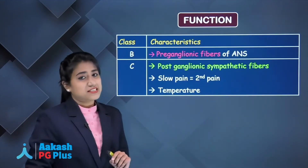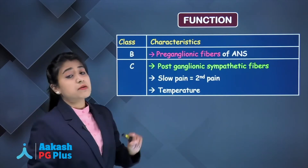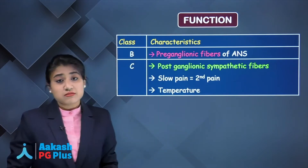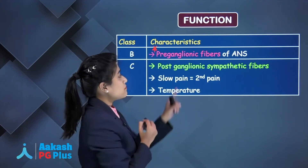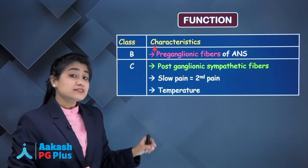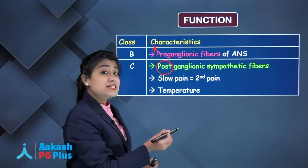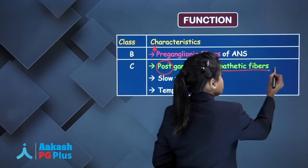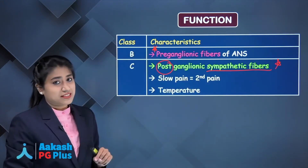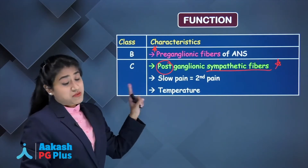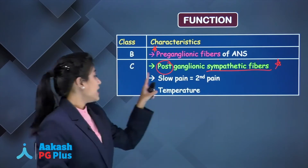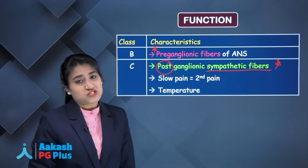B fibers are found in preganglionic fibers of the autonomic nervous system — very important. C fibers are found in postganglionic sympathetic fibers. For sensation, C fibers carry slow pain, also called second pain, as well as temperature sensation.